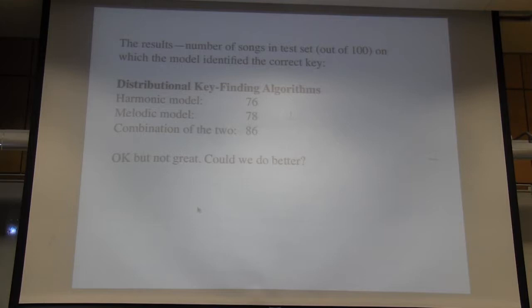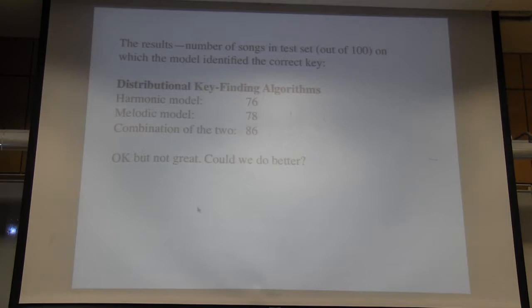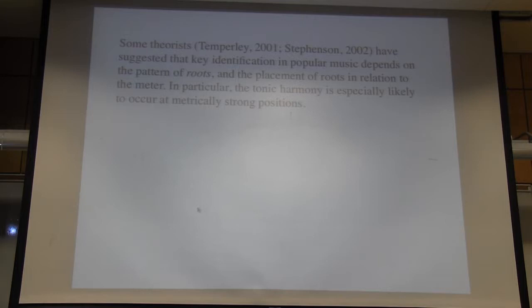Here are the results: the harmonic model got 76 right out of 100 songs, the melodic model got 78 right, and then we tried combining the two profiles to create a 24-valued key profile. We thought this was okay, but wondered if we could do better. Some theorists, including myself, have suggested that key identification in pop music depends partly on the pattern of roots and specifically on the way roots are aligned with the meter. In particular, the tonic harmony is especially likely to occur at metrically strong positions.